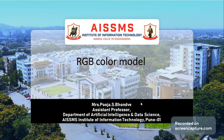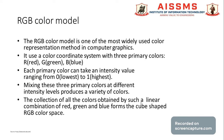In this model, colors are prepared by adding the components, and black is formed without the presence of any color. The RGB color model is used in various digital displays like TV, video display, computer display, digital cameras and other light-based display devices.